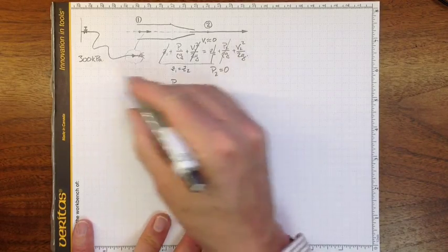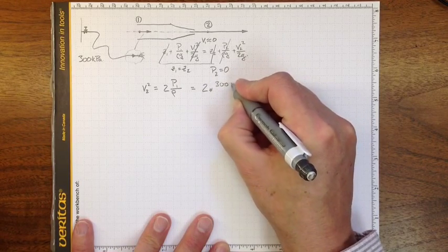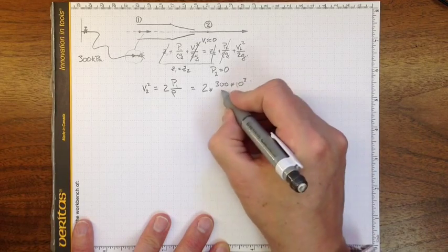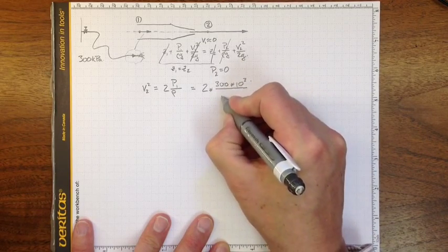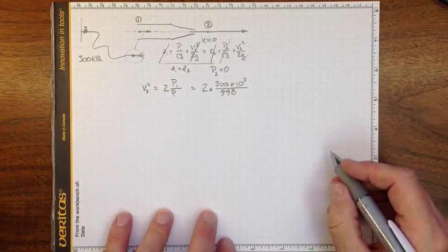2 times 300 kilopascals, so that's 300 times 10 to the third, divided by, if it's water, 998. That's V2 squared.